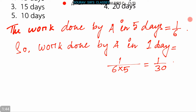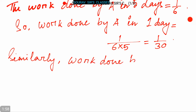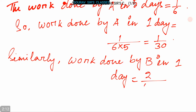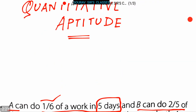Similarly, the work done by B in one day is equal to 2 divided by (5 × 8), that is equals to 1/20.